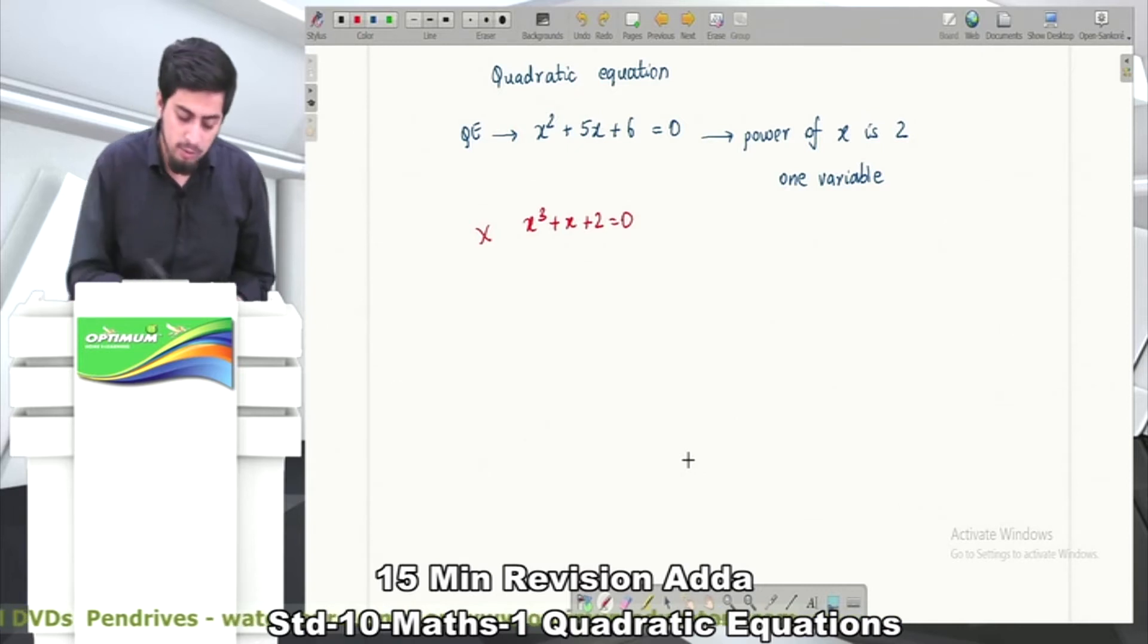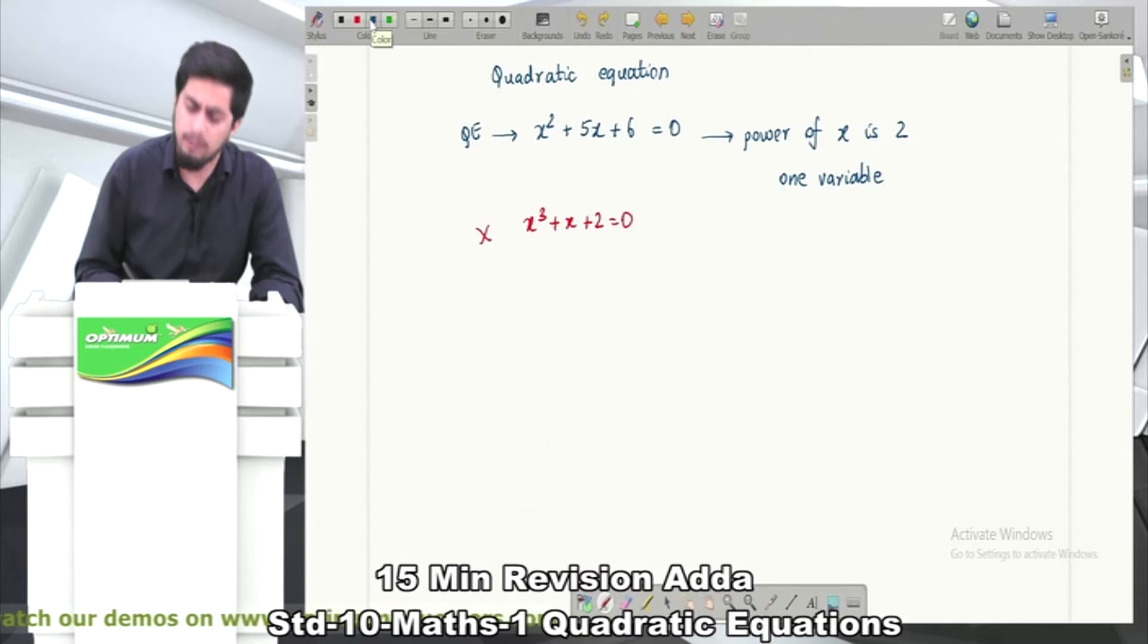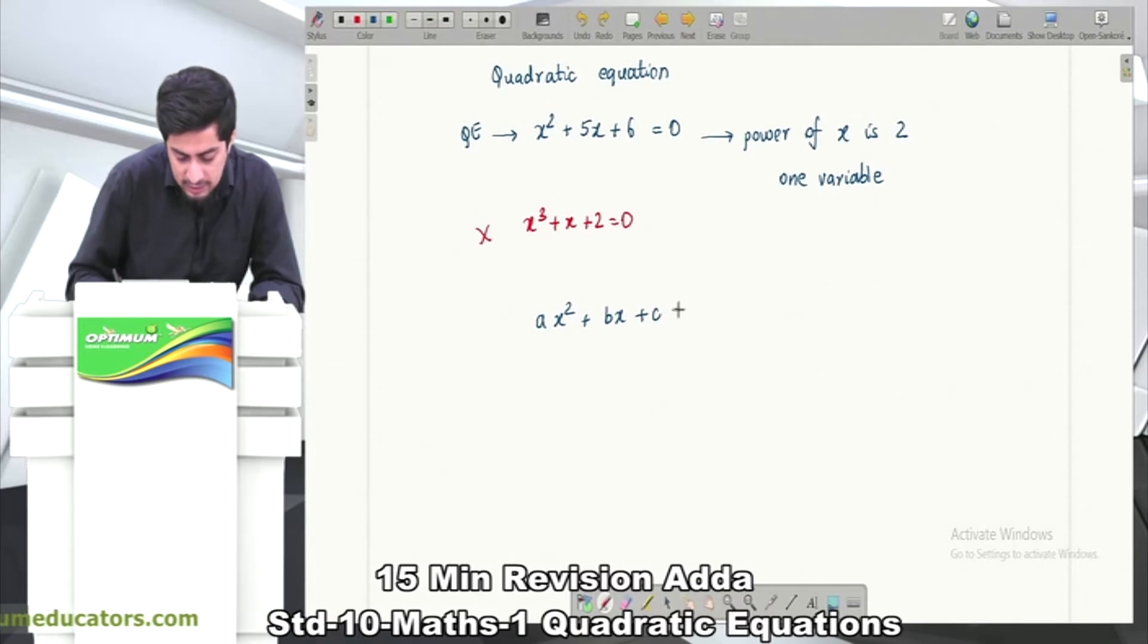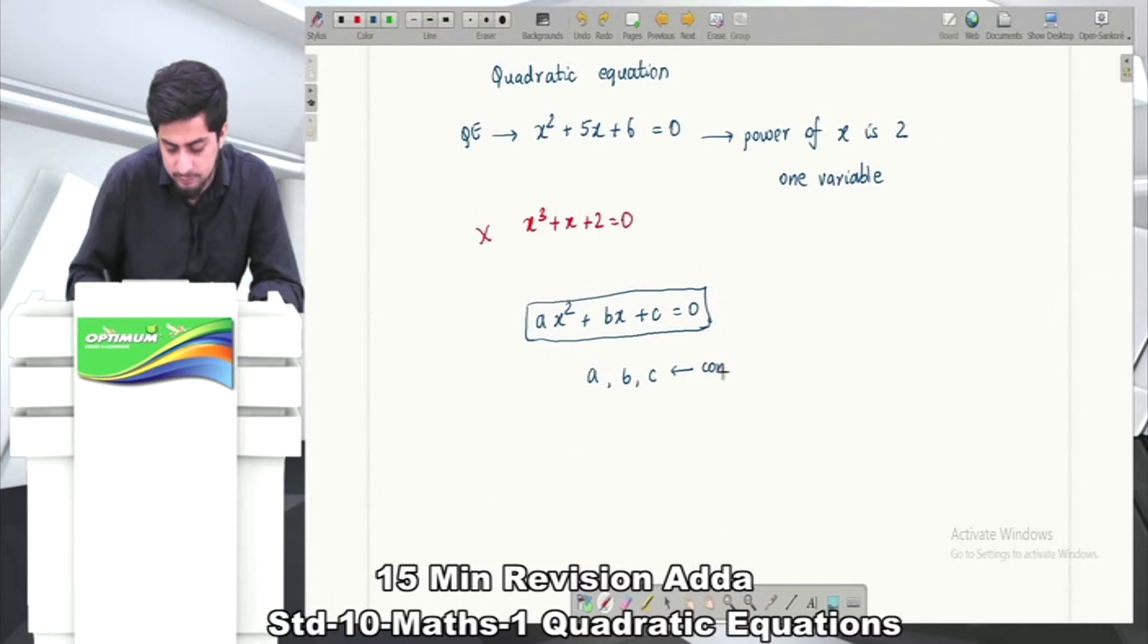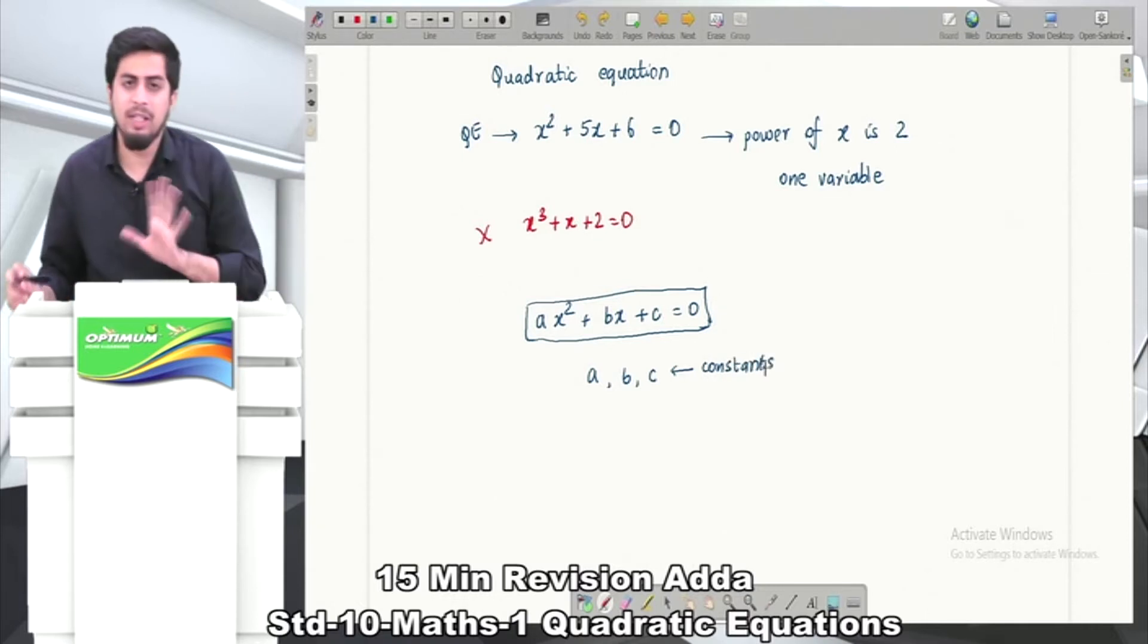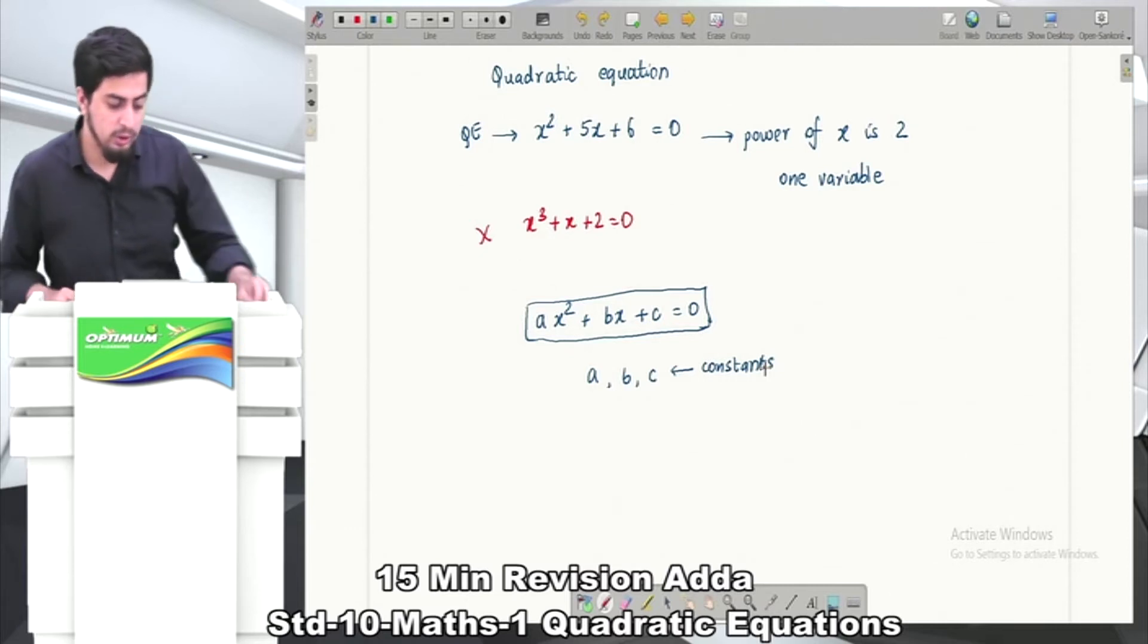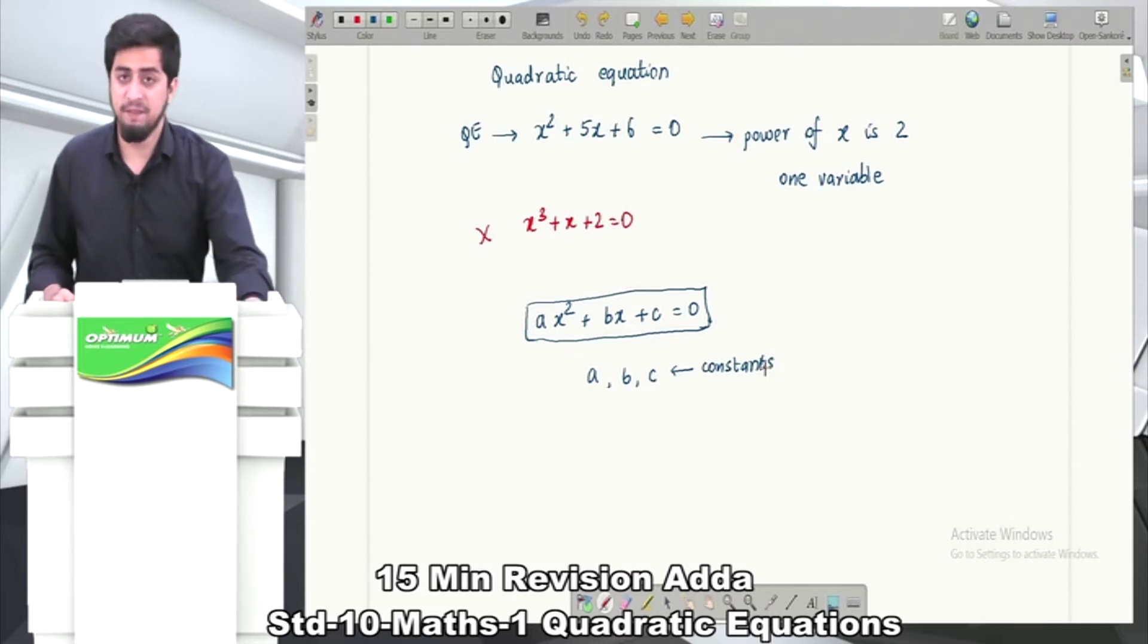After identification of your quadratic equation, what is the standard form? The standard form is ax² + bx + c = 0. This is our standard way to write a quadratic equation, where a, b, and c are constants.